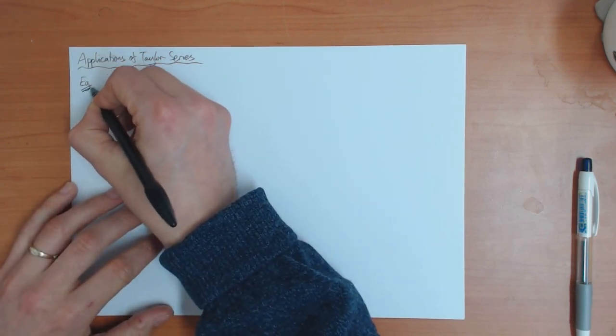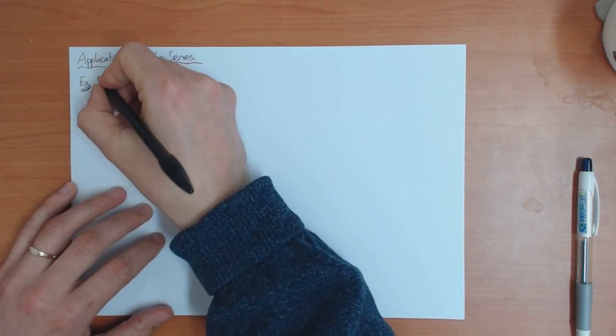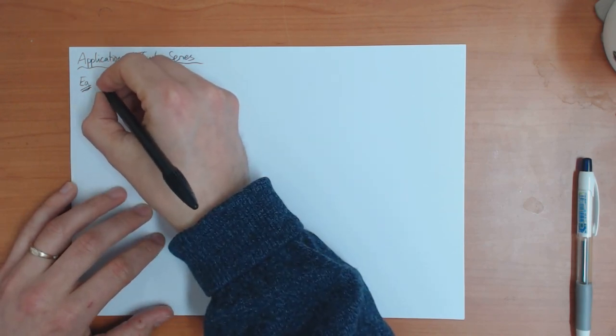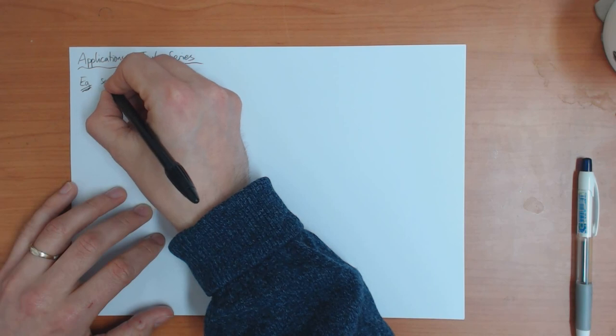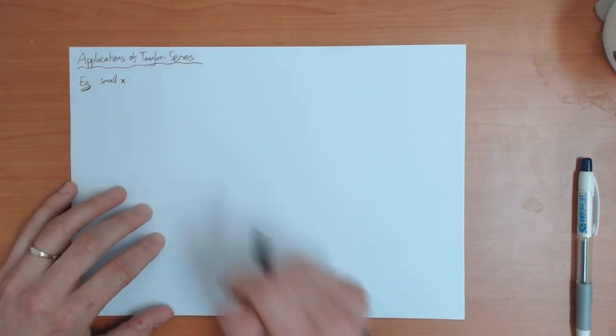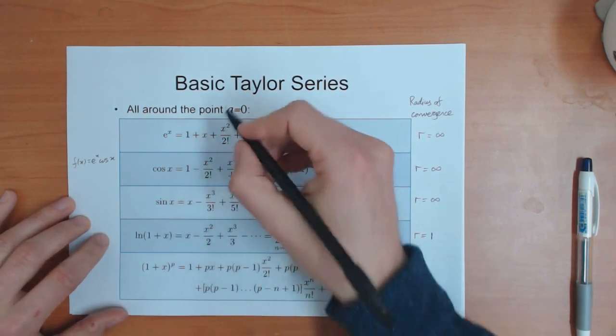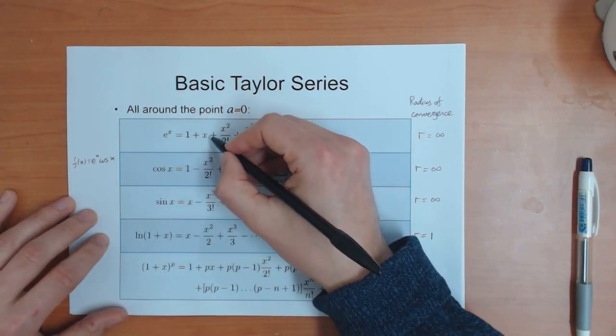Now an example which comes up a lot and I think it's very good for you to learn is what happens if x is small in these Taylor series. So this really is very easy if you've got the basic Taylor series here. If x is small enough, you can just cut off the Taylor series after the first term.